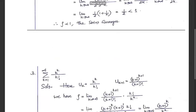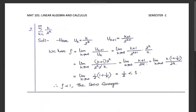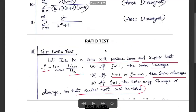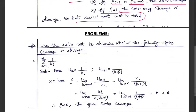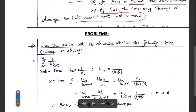Now let's move on to the problems. The first problem: use the ratio test to determine whether the series Σ (k=1 to ∞) 1/k! converges or diverges. Here u_k = 1/k!.